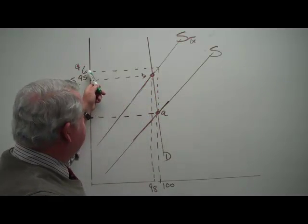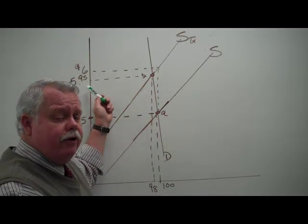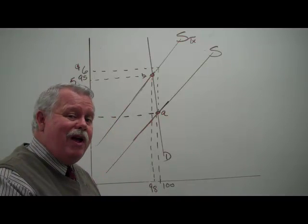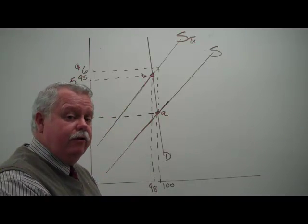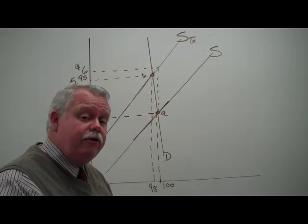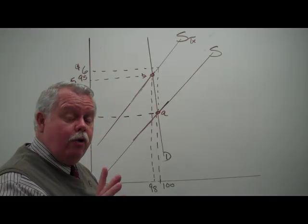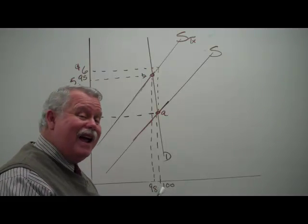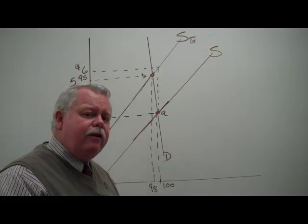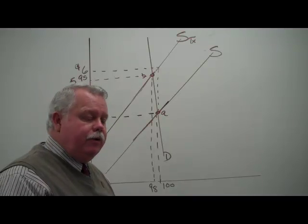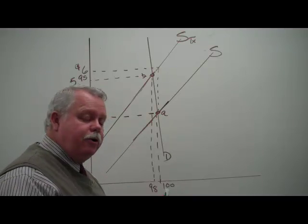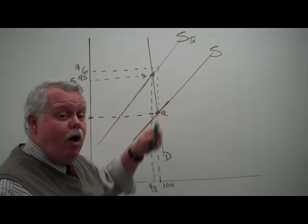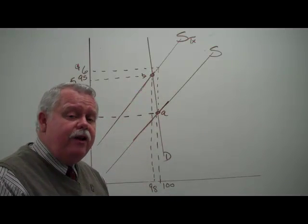The price rose not to $6, but to $5.95, indicating that the buyers are going to be willing to pay most of the tax. They're paying $0.95 more per unit. Whereas they used to buy 100 units, they're still buying 98 units. They must like this product quite a bit to continue buying almost as many as they did and to be willing to pay almost the entire tax. That's inelastic demand.